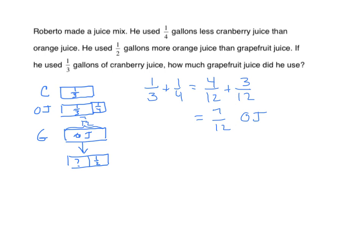We're going to take seven-twelfths and subtract one-half: seven-twelfths minus one-half. We could use twenty-fourths as our common unit, because twelve times two is twenty-four. Seven-twelfths is fourteen twenty-fourths, and one-half is twelve twenty-fourths. We subtract and get two twenty-fourths. That answer is acceptable, but we can simplify — both are even, so two divided by two is one, and twenty-four divided by two is twelve. The answer is one-twelfth.